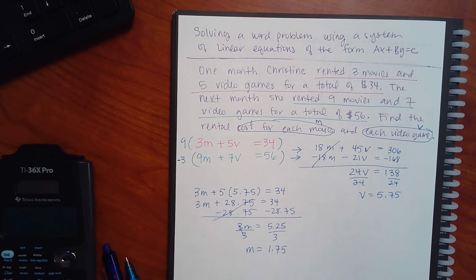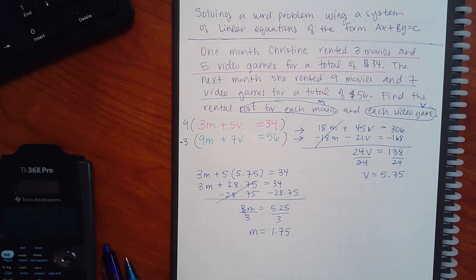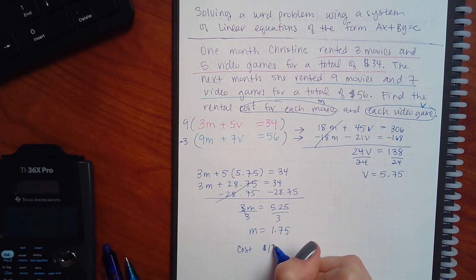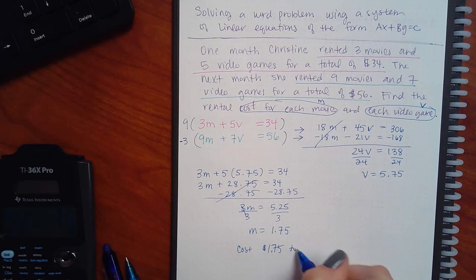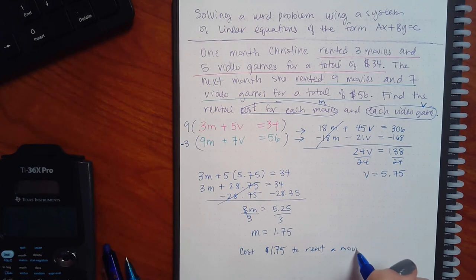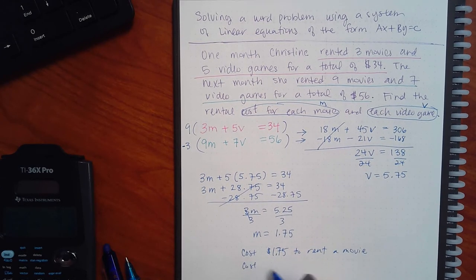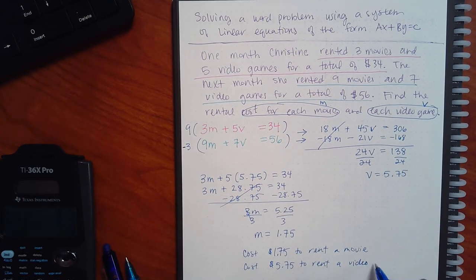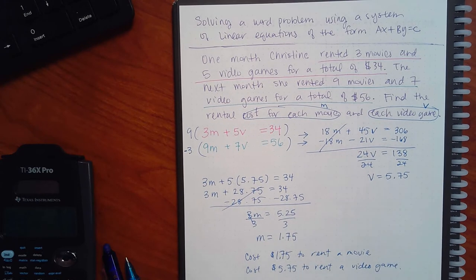I plug V back into the top equation: 3M plus 5(5.75) equals 34, so 3M plus 28.75 equals 34. Then 34 minus 28.75 equals 5.25, and dividing by 3 gives M equals 1.75. So it costs $1.75 to rent a movie and $5.75 to rent a video game — video games always cost more than movies, which makes sense.